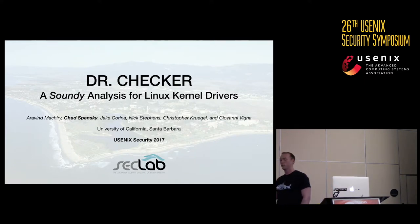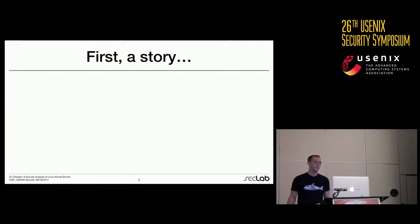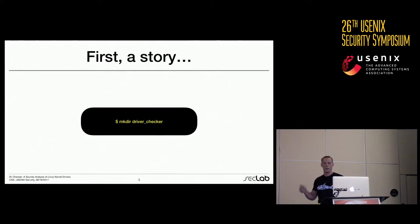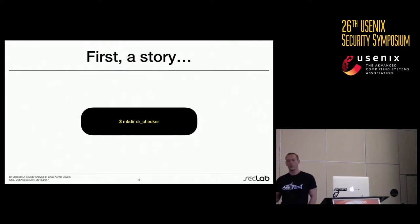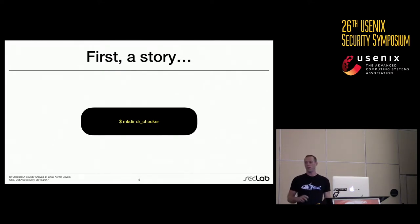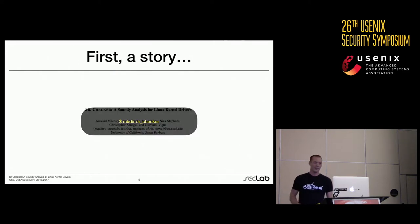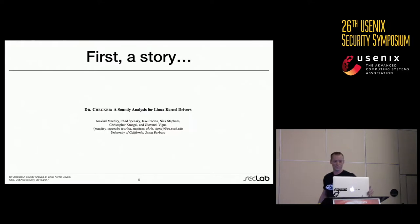Before I tell you about the paper, I first want to tell you a story about the name, because it comes up a lot. Why is it called Dr. Checker? When Machiri first proposed this work, he made a directory. The normal person would probably call this 'driver-checker' — we're going to make a static analysis tool that looks at kernel drivers. Machiri did it differently: 'mkdir dr_checker' as an abbreviation for driver. Fast forward to an hour before submission, Machiri asks whether we should change the working title to a real title. All of the co-authors said, what do you mean? It's Dr. Checker. He said that was supposed to be an abbreviation for driver and everyone just called it Dr. Checker and he went with it. So that's why the paper is called Dr. Checker — a working title that made it all the way through.